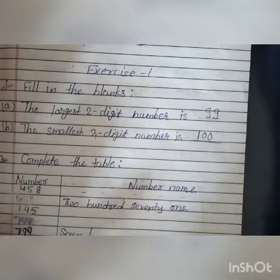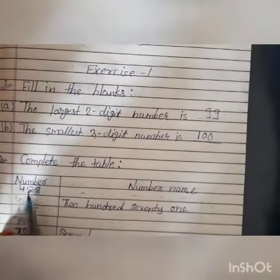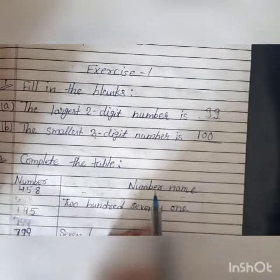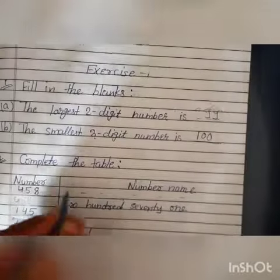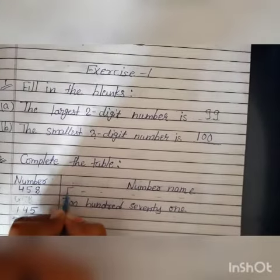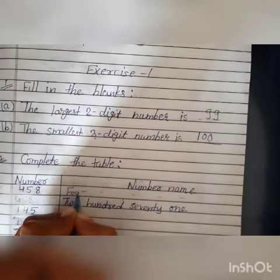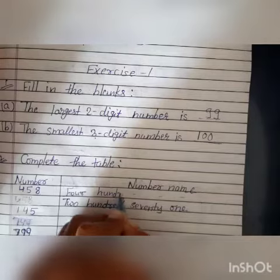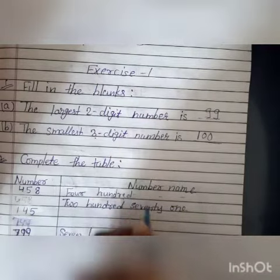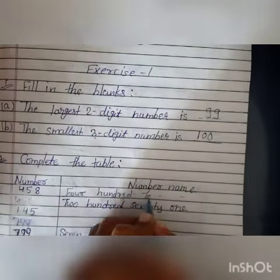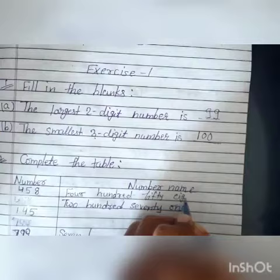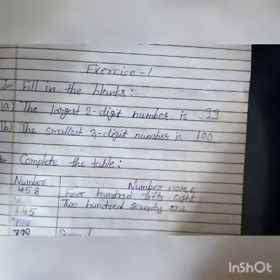Next: complete the table. Hamein yeh table ko complete karna hai. 458 — isko number name kya hoga? To isko kya likhengi: 4 hundreds, 50, 8 — yani four hundred and fifty-eight.